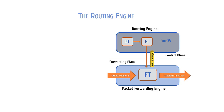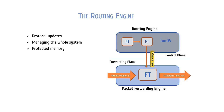The routing engine is responsible for executing routing protocol updates and managing the system. The RE runs various protocol and management software processes that reside in the protected memory space. The RE is based on an x86 or PowerPC architecture depending on the hardware platform. The RE maintains the routing tables, bridging tables, and primary forwarding tables. The routing engine connects to the PFE through the internal link.